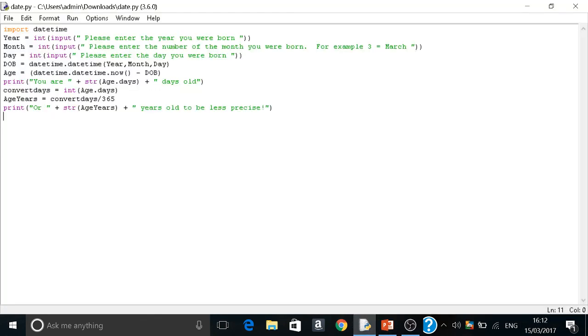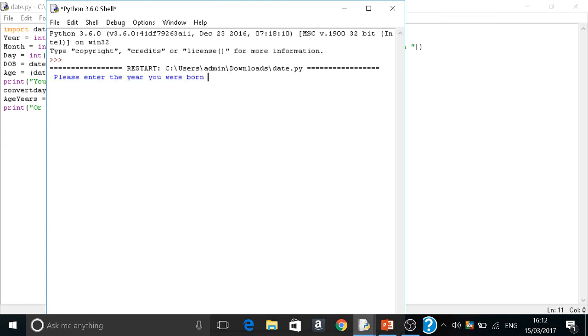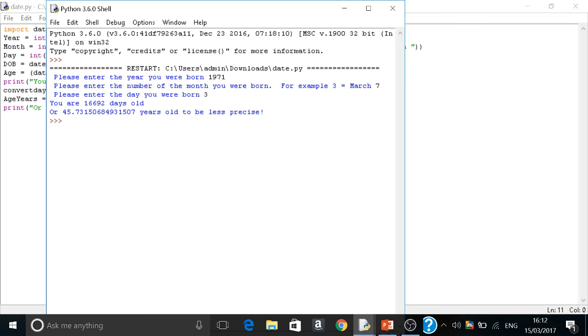I have it here exactly the same. I'm born in 1971. I was born on the seventh. Actually I was born in March but never mind it'll still work. I'm going to put a three in there, and it tells me I'm slightly younger than actually what I am. Anyway, I'm sixteen thousand six hundred ninety two days old or forty five point seven three, and that's it.